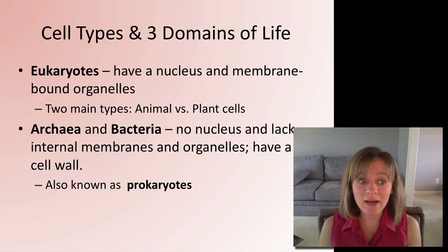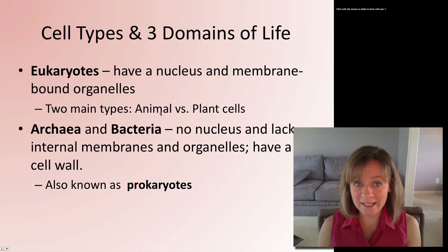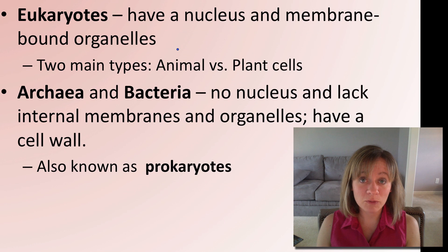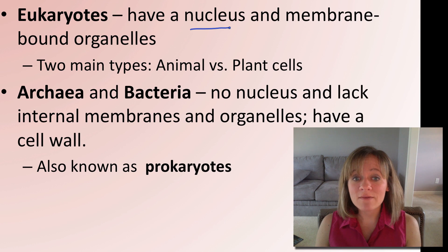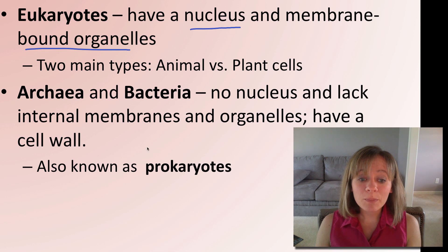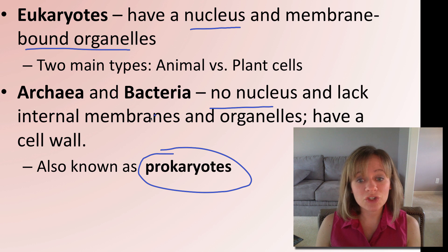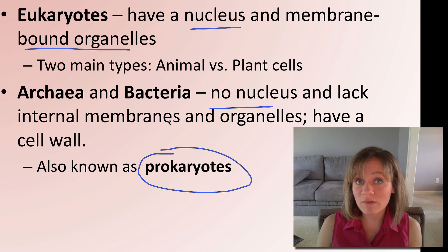Cell types: in the three domains of life there are two main types of eukaryotes — animals and plants. Eukaryotes have a nucleus, internal membranes, and organelles. A lot of this is review from freshman or sophomore year biology. Prokaryotes, the other type of cell, do not have a nucleus, do not have internal membranes, and do not have organelles.